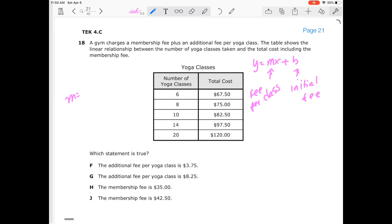So our slope is going to be equal to, there's a couple of ways that we can handle this. We can just take 75 minus 67.50, divide that by 8 minus 6, which will give us 3.75. So additional fee per yoga class, that's true. G is false.